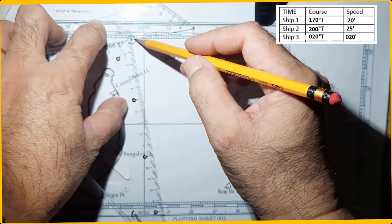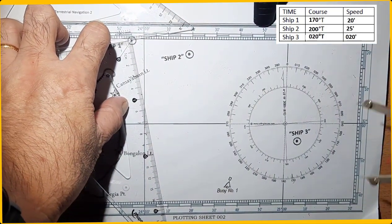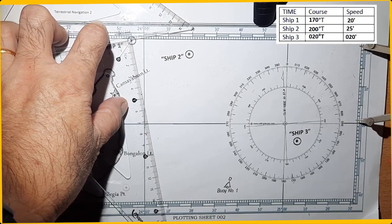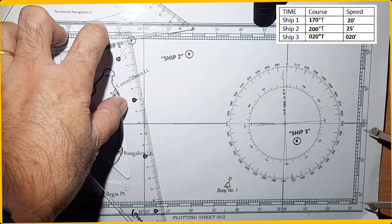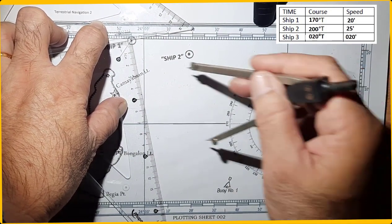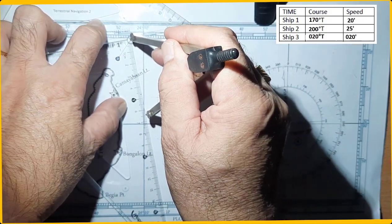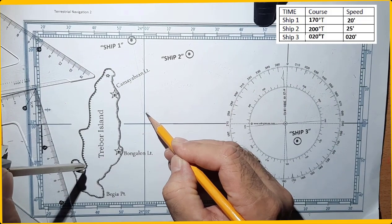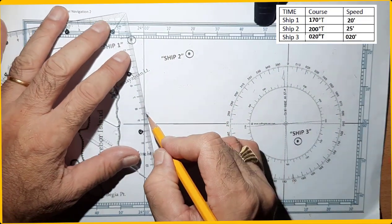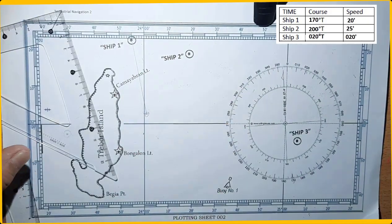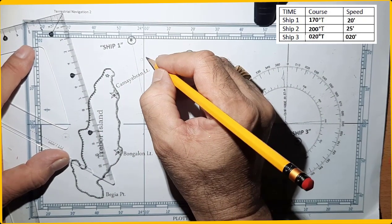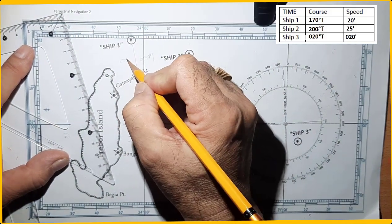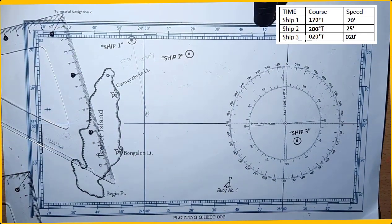Now that's your course. For your speed, use compass divider, 20. So 10, 20. Always use the scale which is level to the location here, not here, not there, but here. So that's your speed. Now you can get out this one. Then you mark. Now you can just put a line, then level. Course 170 degrees true and speed equals 20 knots. Ship 2 is 200 degrees true.